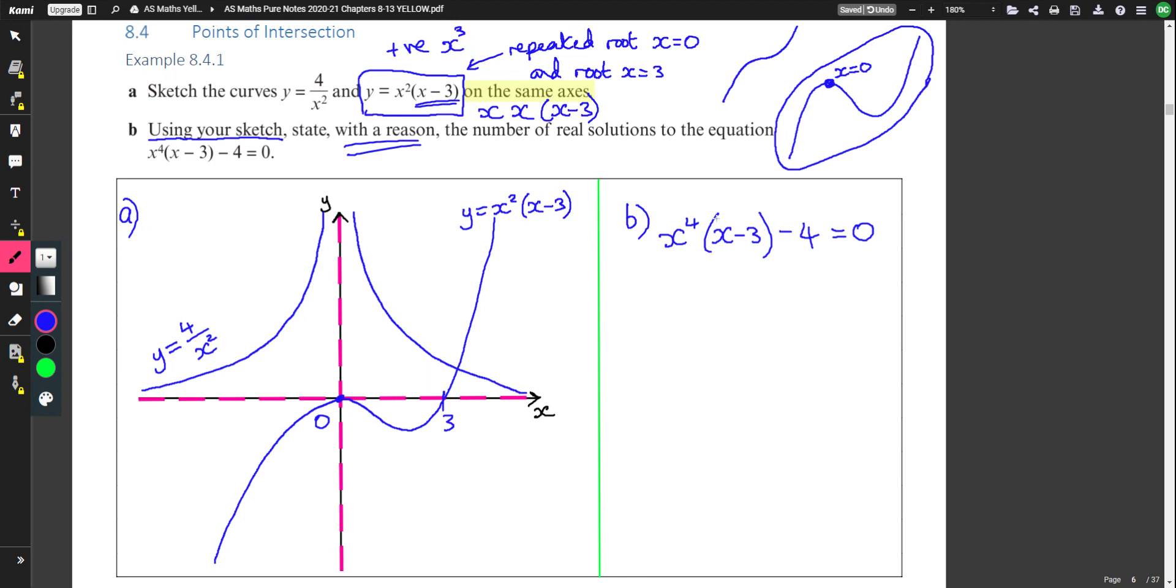Well, it must be related to the graph because the question says so. And you do see a small similarity. We've got this x minus 3 that we've also got on one of the graphs. Let's start rearranging this and see if we can make it look more like the two graphs we've drawn. I'm going to add 4 to both sides.